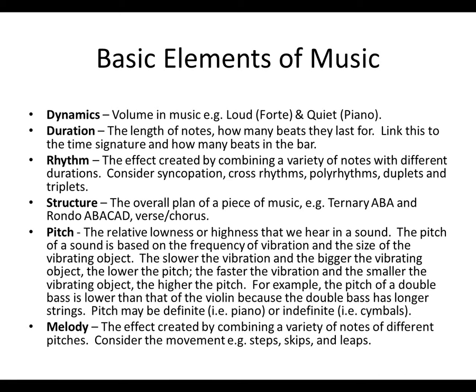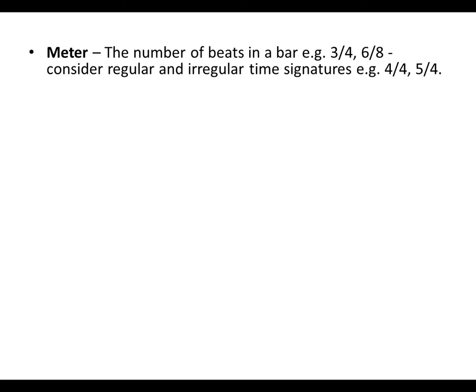Then we have melody — the effect created by combining a variety of notes of different pitches. Consider the movement: steps, skips, leaps. Then we have meter or time signature — that is the number of beats in a bar. For example, 3/4 or 6/8. Consider regular and irregular time signatures such as 4/4, which is regular, or 5/4, which is irregular.